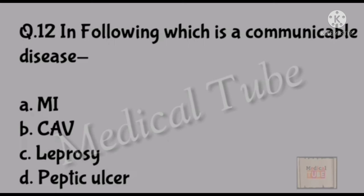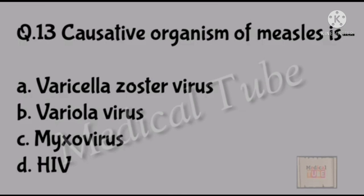Twelve number question: Following which is a communicable disease? Correct answer is C: leprosy. Thirteen number question: Causative organism of measles is? Correct answer is C: morbillivirus.